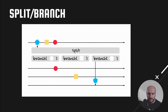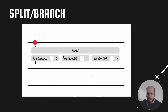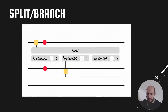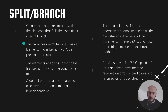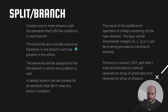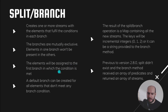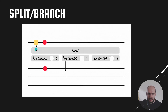The next operation is split and branch. Here we can turn one stream into multiple streams based on different conditions. For example, we're creating three different streams: one for circles, one for squares, and one for pentagons. The split-branch operation creates one or more streams with the elements that fulfill the conditions in each branch. The branches are mutually exclusive — each element will be assigned to the first branch in which the condition is met.